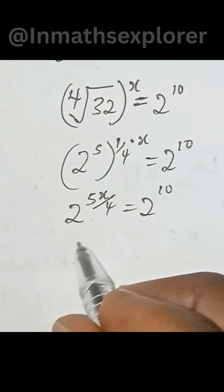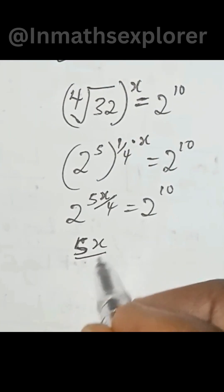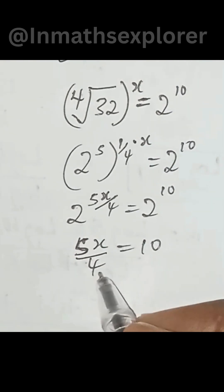So let's equate the exponent now. So we have 5x over 4 equal to 10. So let's multiply this,